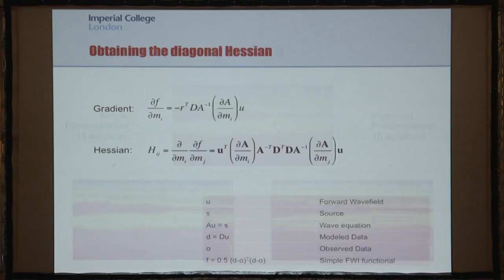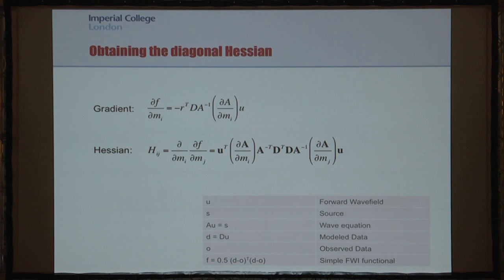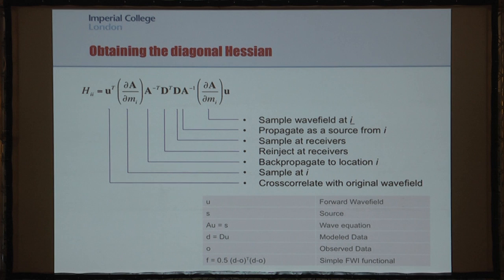To obtain elements of the Hessian, we can use a formula derived for a very simple construction of FWI. We're using the simplest possible FWI functional — half of the squared sum of the residuals. There is actually a second term which I'm ignoring, as many people do, because it's not always positive definite and it varies with the residual. So this focuses on the so-called Gauss-Newton component of the Hessian.